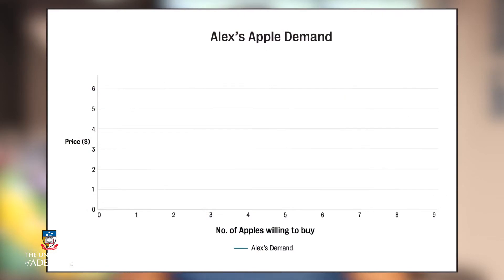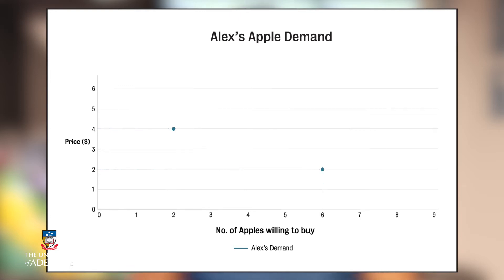In the following example, we'll use a graph to show how a consumer whom we have called Alex might react as the price of apples fluctuates. If the price of an apple is $4, Alex is willing to purchase two apples. If the price of apples is $2, Alex is willing to purchase six apples. If you draw a line between these two points, you get Alex's demand curve for apples.